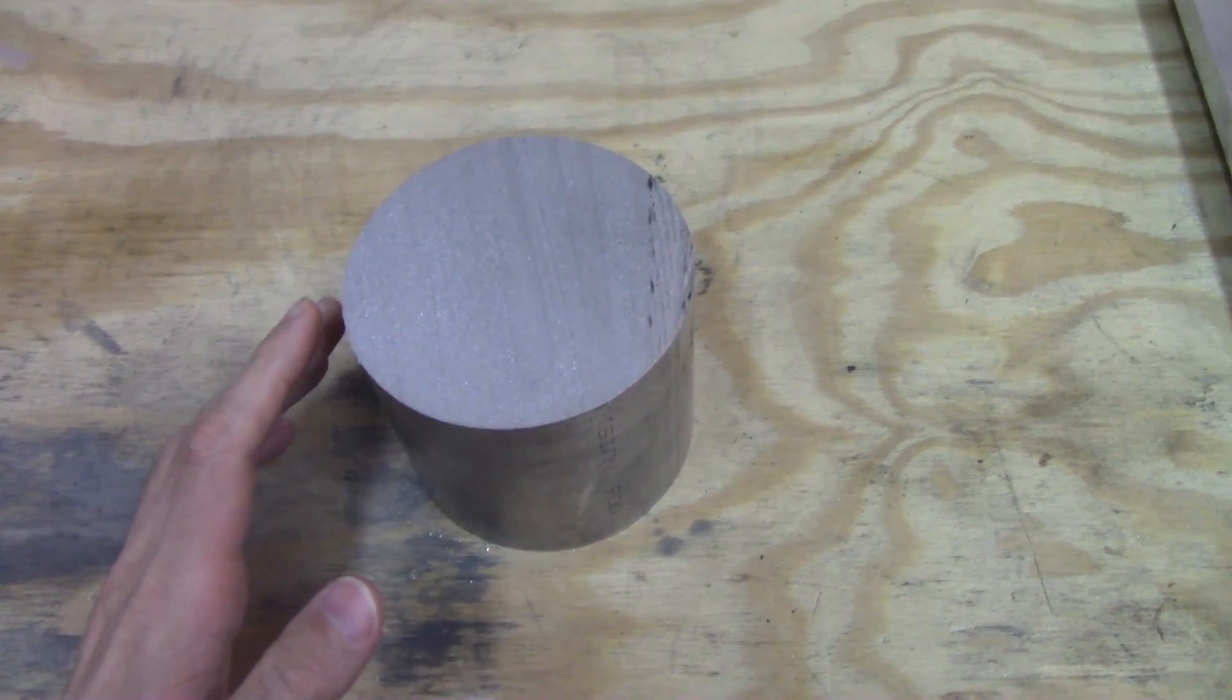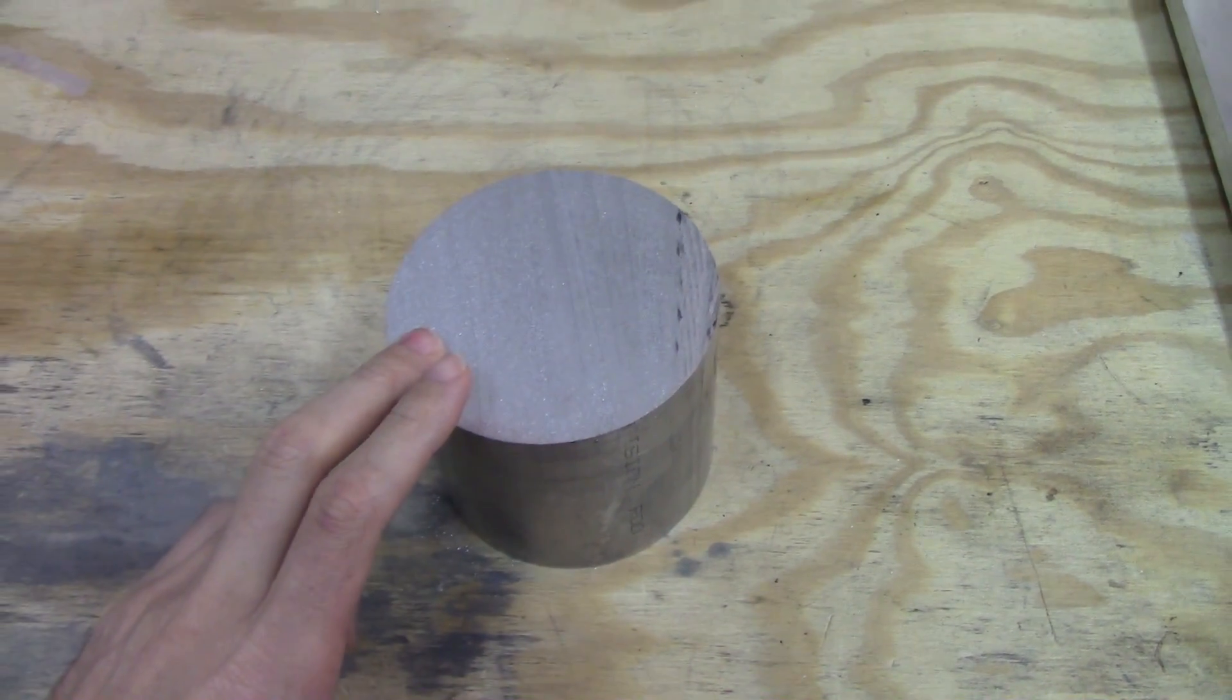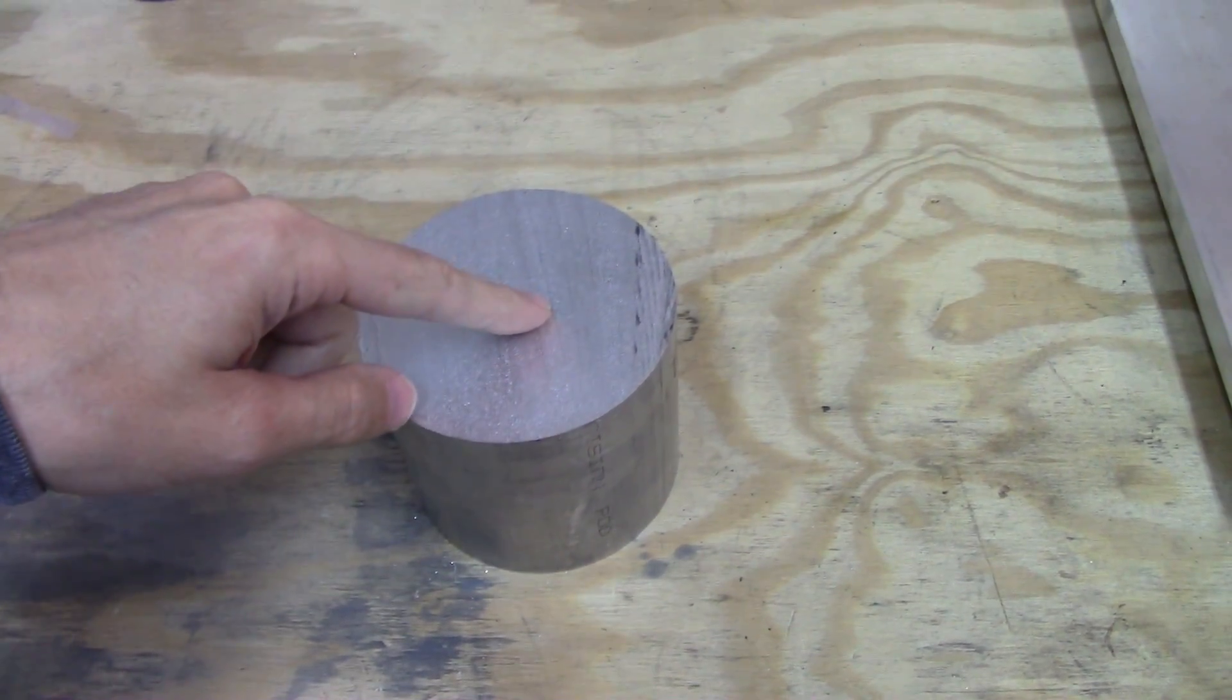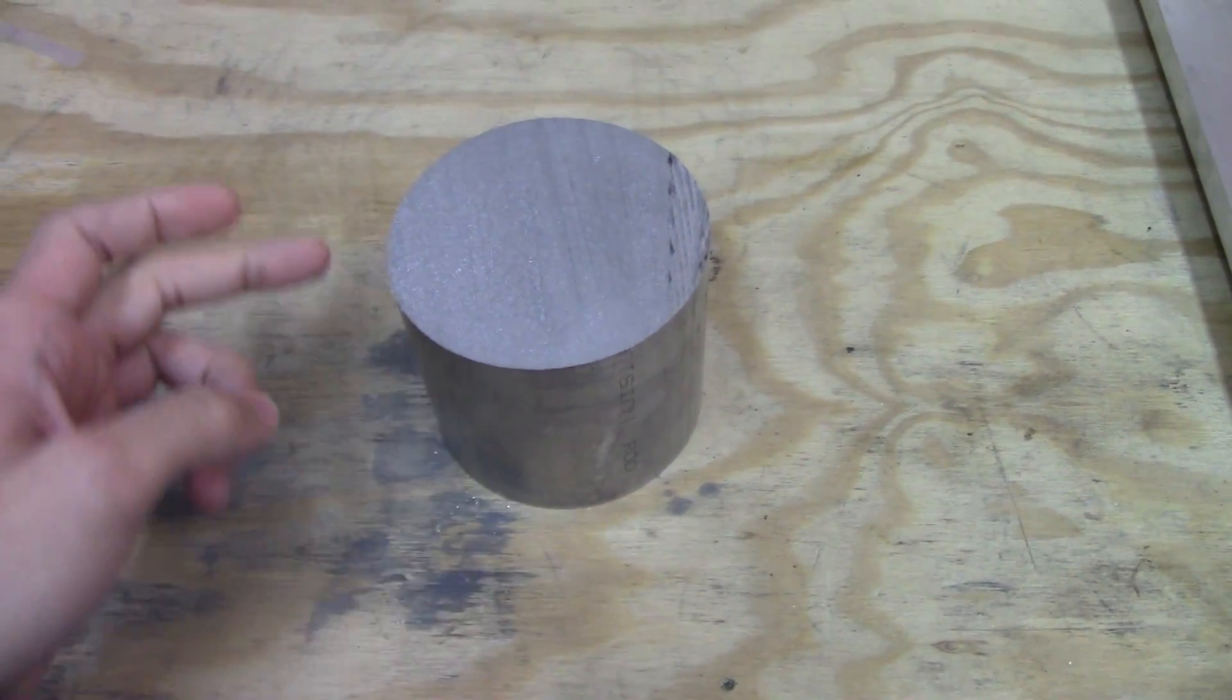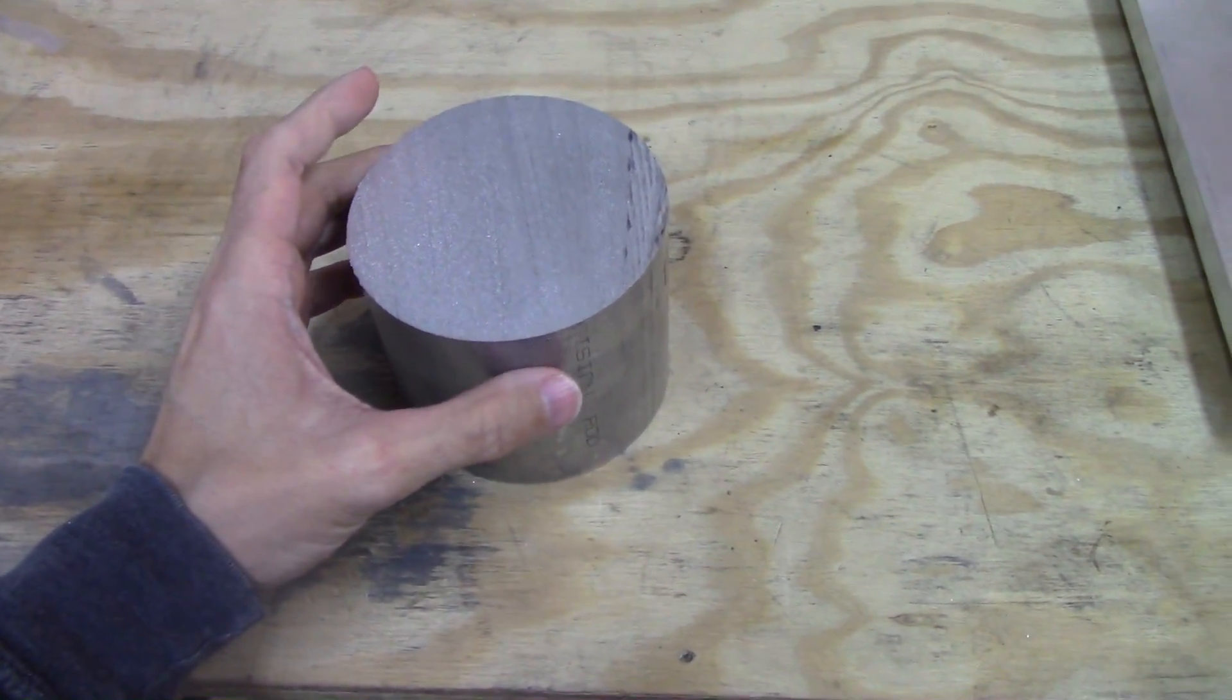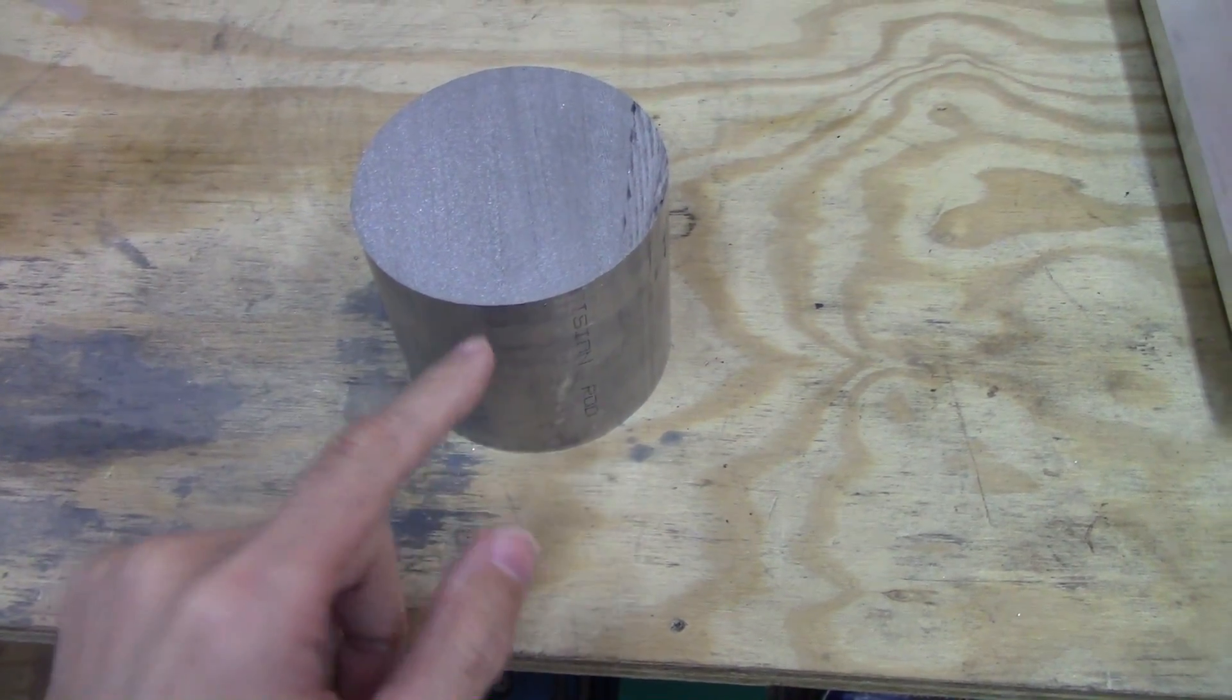The first thing we're going to do is face off both sides of this. I already cut it in the bandsaw very poorly. We're going to face off both sides and then bore out the center, and then drill three holes on the top and insert set screws so that it locks itself to the top section of the spindle. Then drill another hole on the bottom that's threaded with a longer bolt.